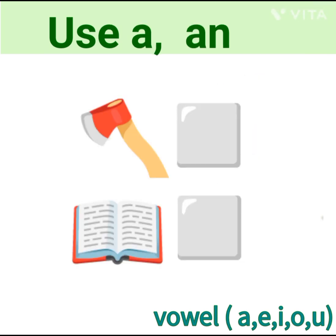Look at this figure. X. The first letter of X is A. A is vowel and single object. So we use AN.